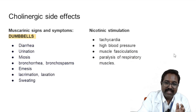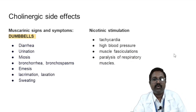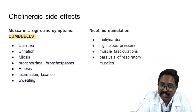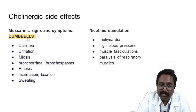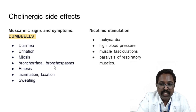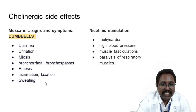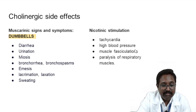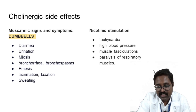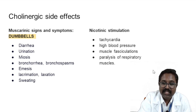Cholinergic side effects can be remembered using the mnemonic DUMBBELLS. Muscarinic side effects: Diarrhea, Urination, Miosis (pupil constriction), Bronchorrhea/Bronchospasm/Bronchoconstriction, Emesis, Lacrimation, Laxation (defecation), and Sweating/Salivation. Nicotinic stimulation can cause tachycardia, high blood pressure, muscle fasciculation, and paralysis of respiratory muscles in severe conditions.